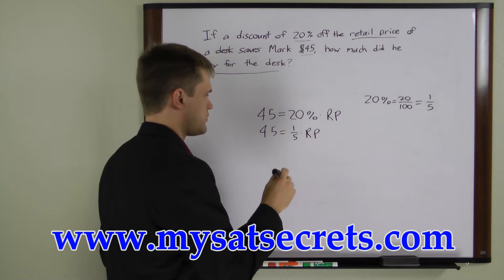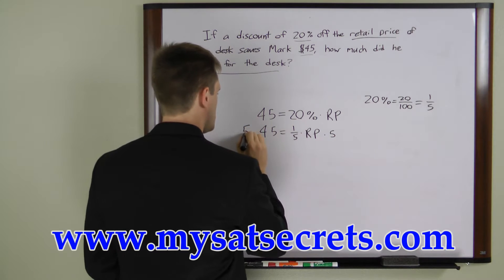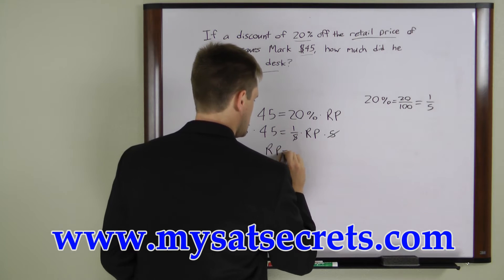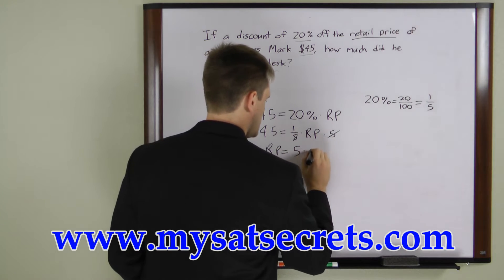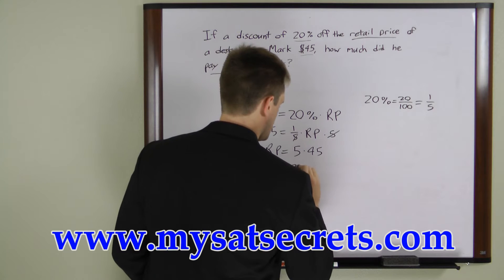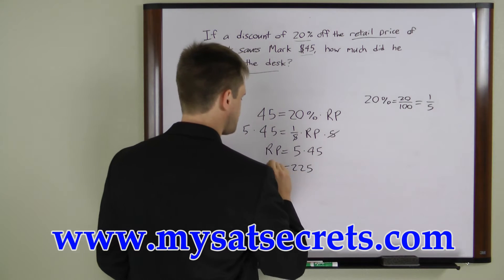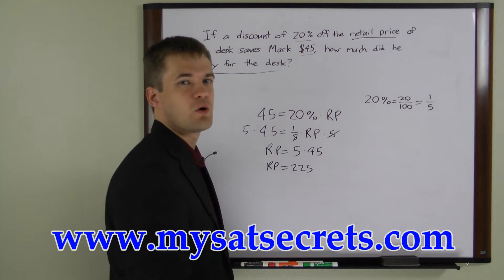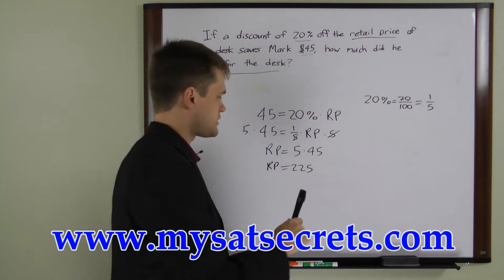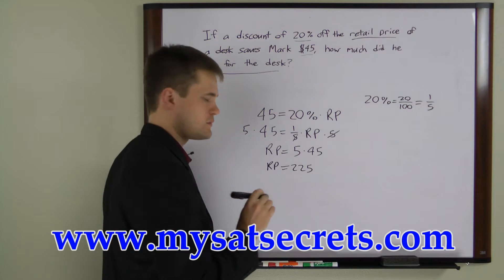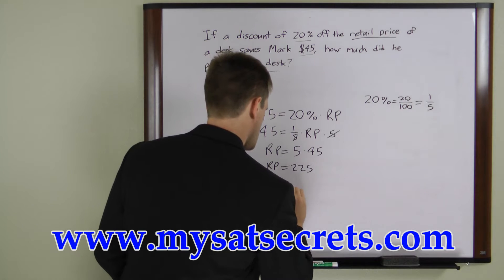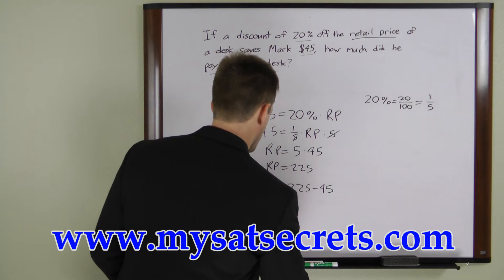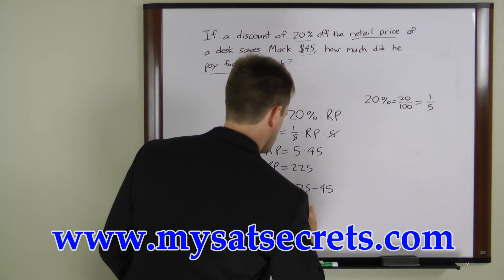To solve this, we multiply both sides by 5. The 5s cancel, giving us: retail price equals 5 times 45, or $225. The sale price is $45 off the retail price, so we subtract: 225 minus 45 equals $180. Mark paid $180 for the desk.